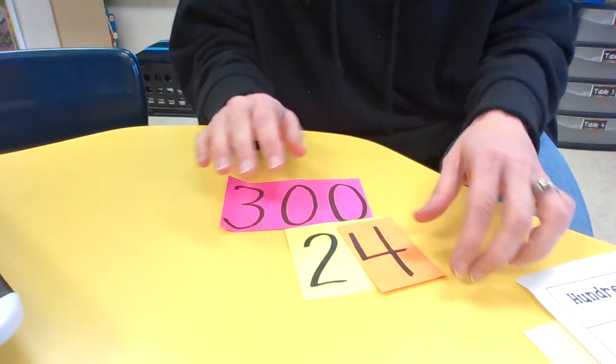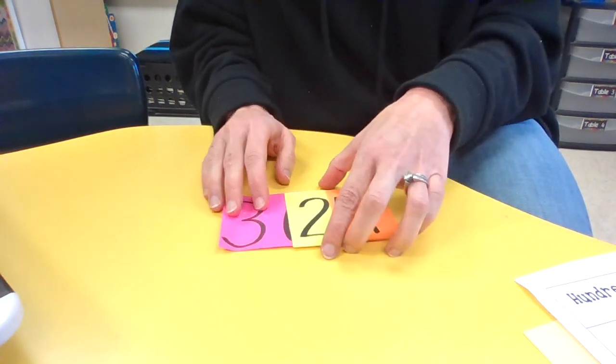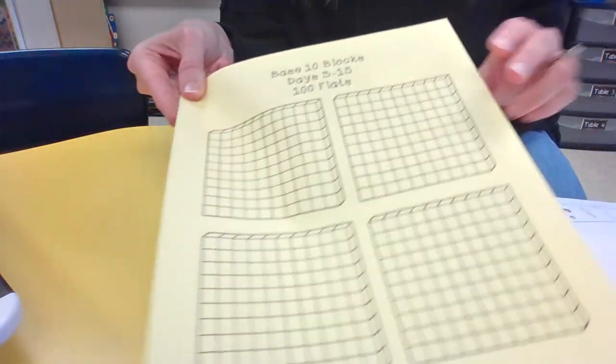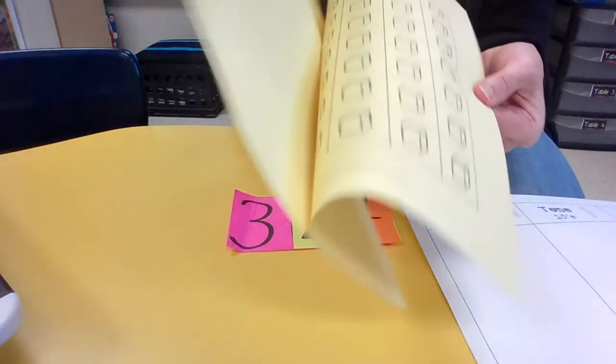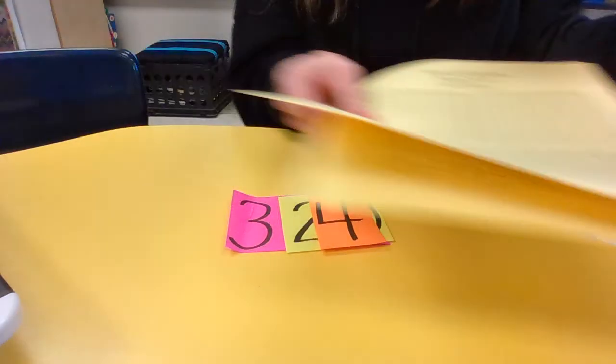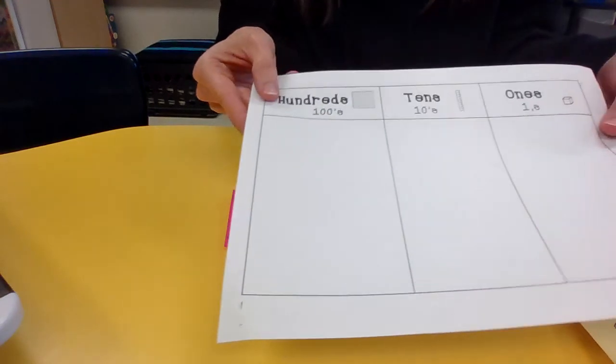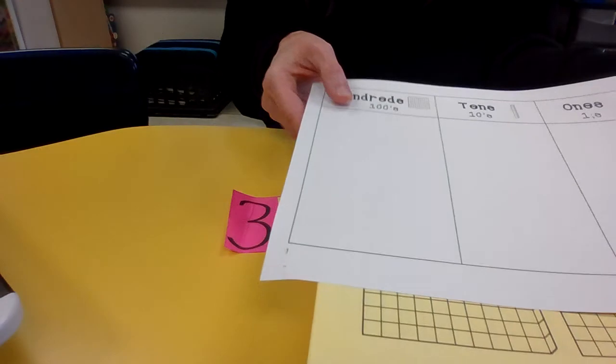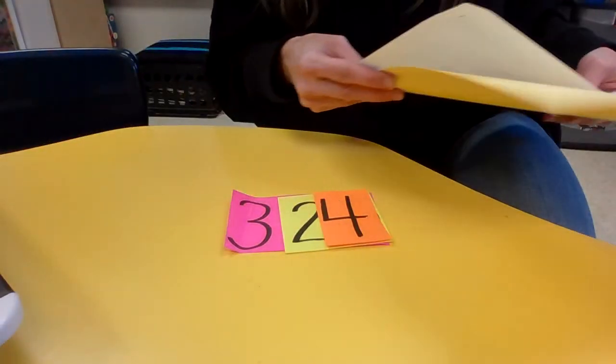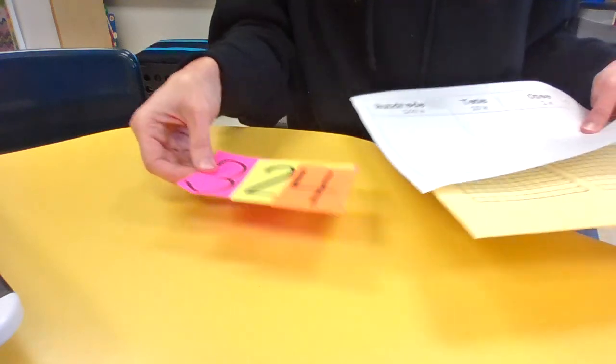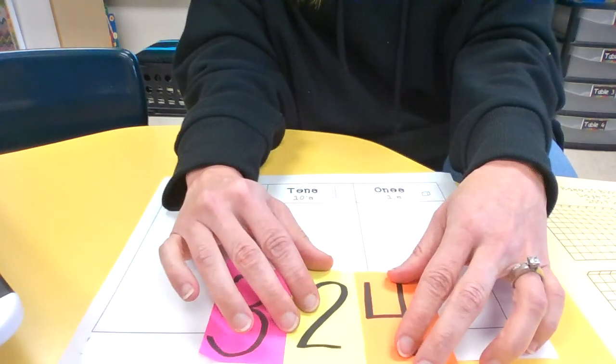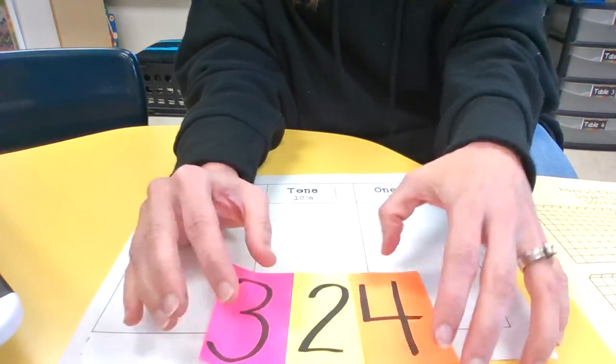So now we're going to start with that number for our first activity. And what I would like for you to do in your math folder, you're going to need to get your base 10 blocks, those yellow blocks that you have. Go get those. And then you need your hundreds, tens, and ones chart. So go grab those things for me. Go ahead and pause if you need to. Hit your pause button and go grab those things. And now I'm going to get my area set up. All right friends, you should be back with your supplies.